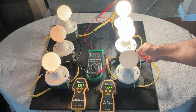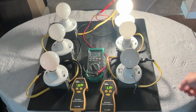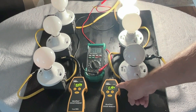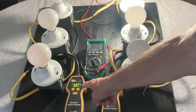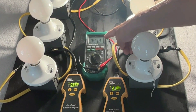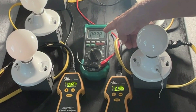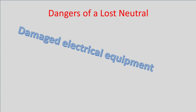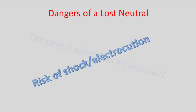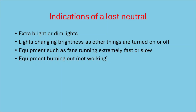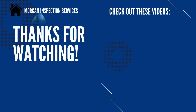Before we close, let's note that with two light bulbs turned off, we had 218 volts on one side, almost 33 volts on the other, and almost 94 volts on the neutral wire. Through these calculations, videos, and animations, you've seen just how serious a lost neutral situation can be. I hope this video has helped you better understand how a lost neutral can affect a home's electrical system, what indications to look for, and what to do if you suspect a lost neutral in your home. I certainly appreciate you watching this video. I'll see you on the next one — thanks again.